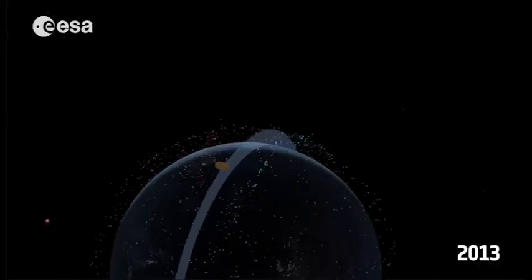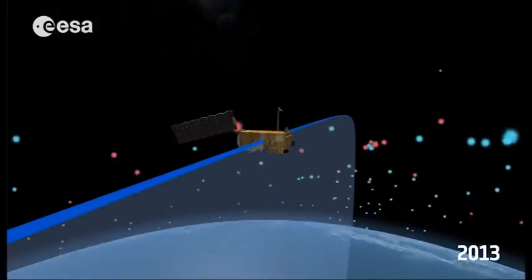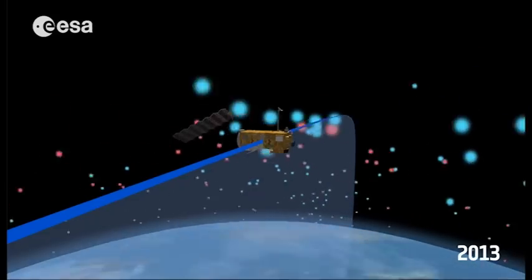This is where all of the near-polar orbits overlap. This is also where the collision between Iridium and Cosmos occurred.